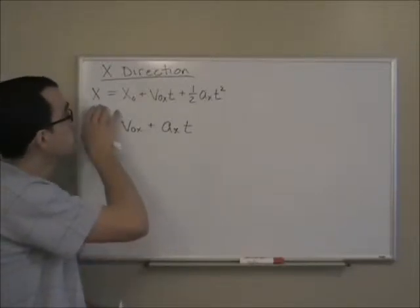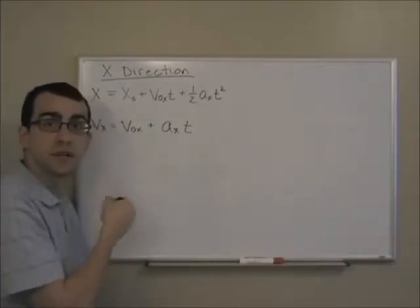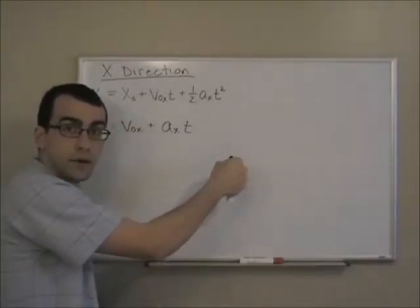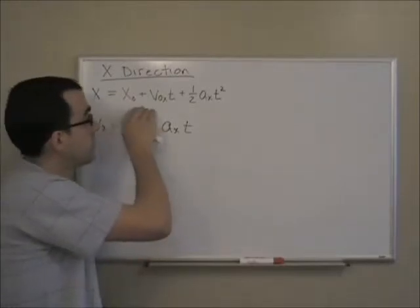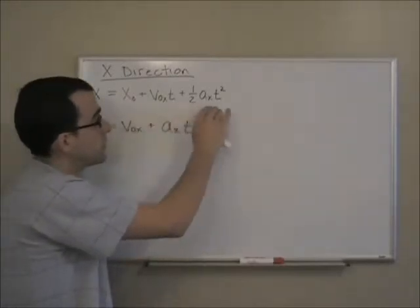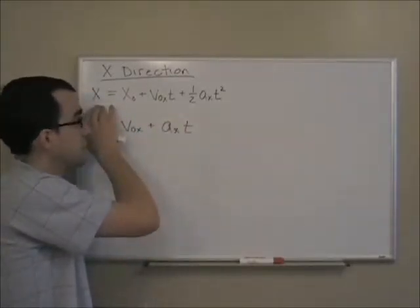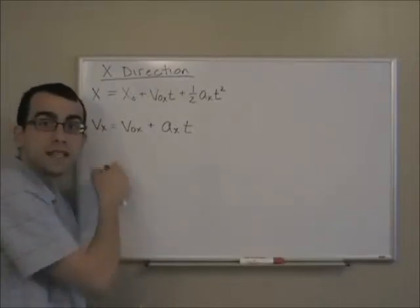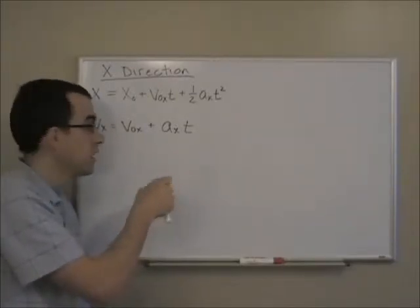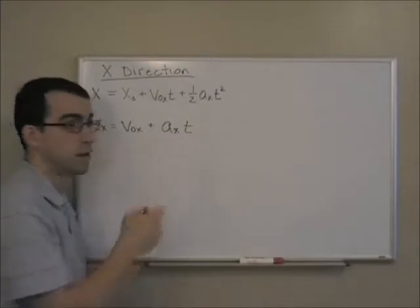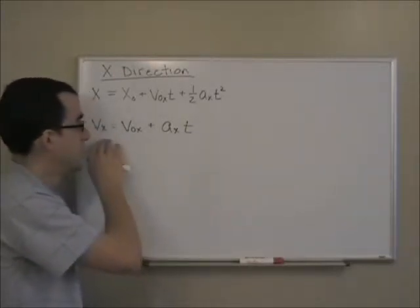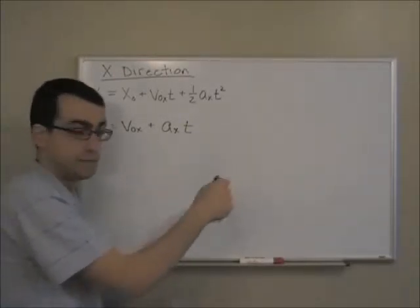For example, if I wanted to find the x position of the object as it traveled from left to right in projectile motion, I could plug values into this equation and find the x position as it traveled. If I wanted to find the velocity in the x direction of this object, I could use this equation. So as the object traveled from left to right, I could find its velocity in the x direction.